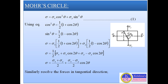Here we are considering both stresses sigma x and sigma y as tensile stresses. On that inclined plane, we have to find out the normal stress and tangential stress. If we resolve all the forces normal to this inclined plane, we will get this equation: sigma equals sigma x cos²θ plus sigma y sin²θ.